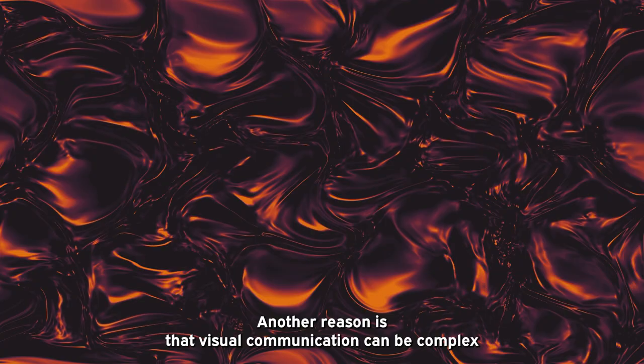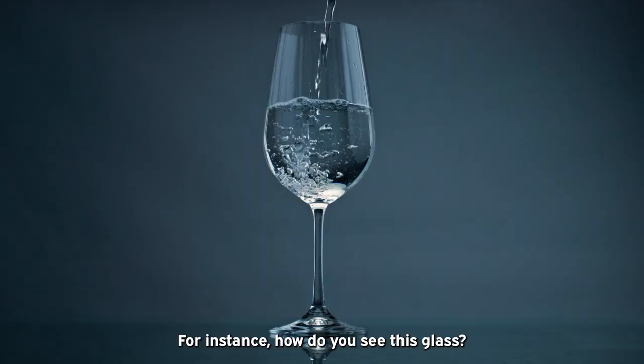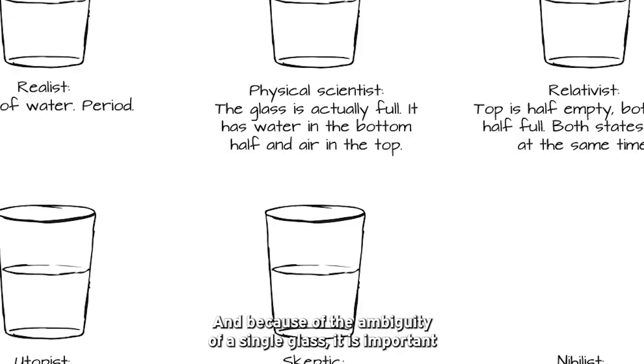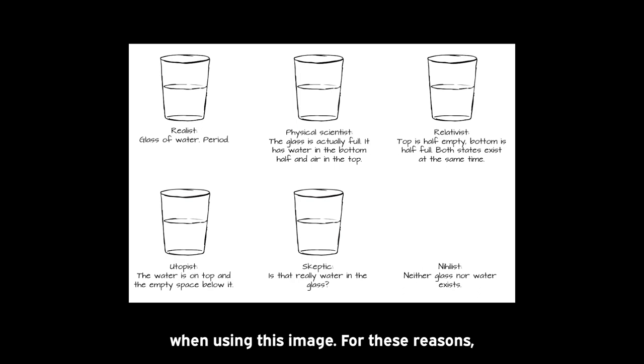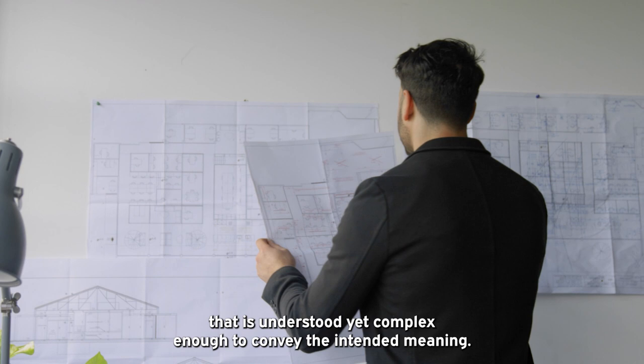Another reason is that visual communication can be complex, as the message can involve multiple layers of meaning and symbolism. For instance, how do you see this glass? Do you see it as half full or half empty? Because of the ambiguity of a single image, it is important to empathize with different viewers and clarify what you are trying to express. The challenge is to create a visual message that is understood yet complex enough to convey the intended meaning.